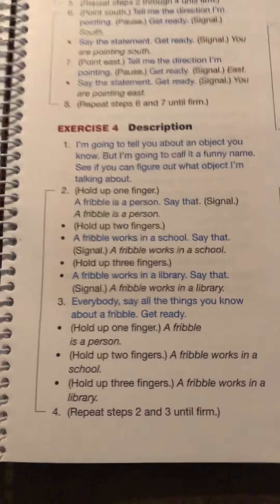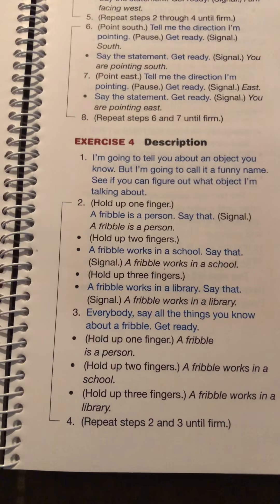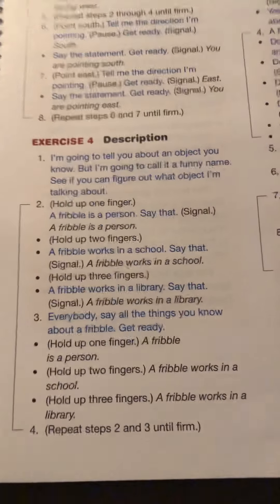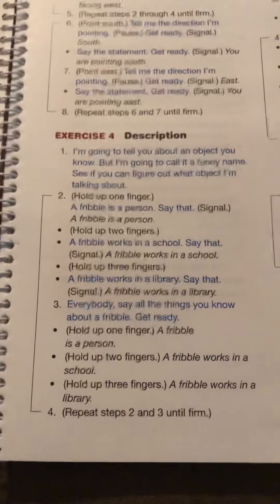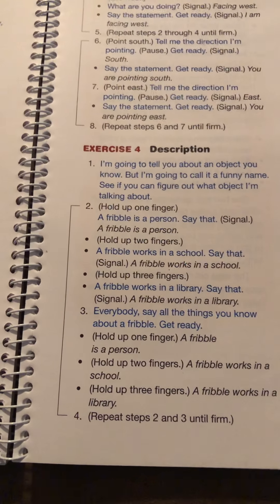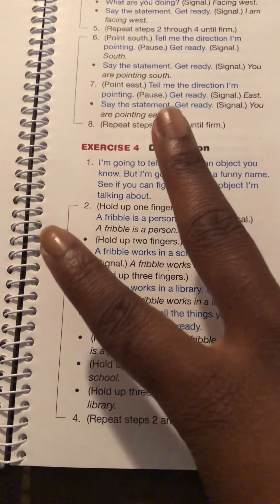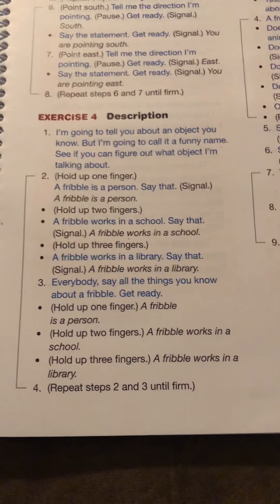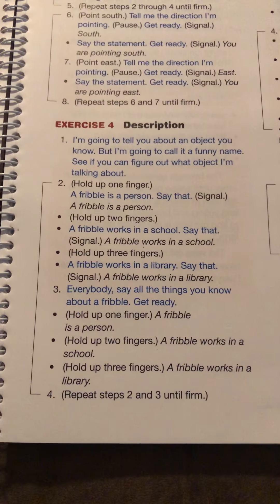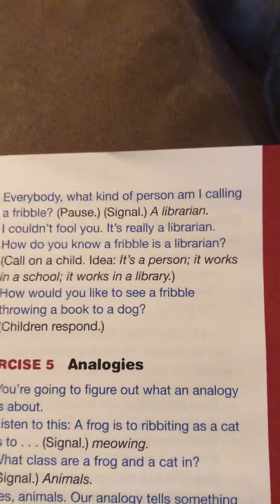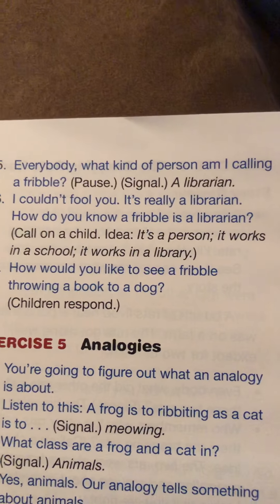Here's the third thing. A fribble works in a library. Let's get ready to say all three things we know about a fribble. Get ready. A fribble is a person. A fribble works in a school. A fribble works in a library. Think about all the things we know about a fribble. Let's see if we can figure out what a fribble is. What kind of person am I calling a fribble? Get ready. Yes — a librarian. I couldn't fool you. It's really a librarian.